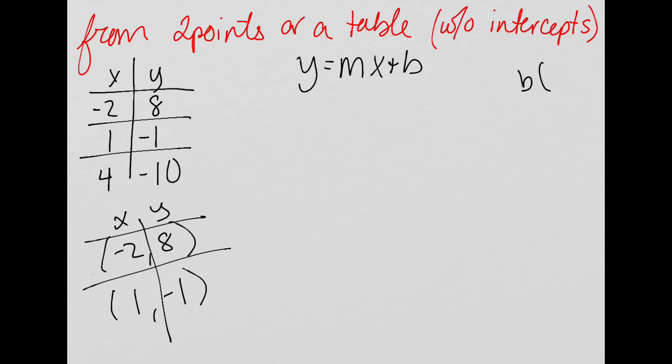Remember, y-intercept would be the point where x is 0. What I notice is that my table doesn't give me an x value of 0. So I know from the previous problem I'm going to have to use that point-slope form because I am given any other point. So I'm going to go ahead and find slope because you would need it for both point-slope and slope-intercept form.